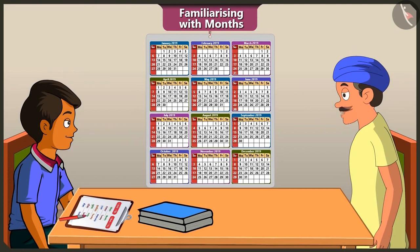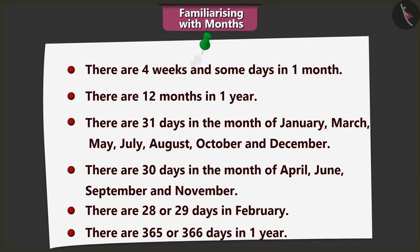Chotu, tell me what all do you remember about the months of a year. There are 4 weeks and a few days in a month. There are 12 months in a year. January, March, May, July, August, October and December have 31 days. April, June, September and November have 30 days. February has 28 or 29 days. There are 365 or 366 days in a year.